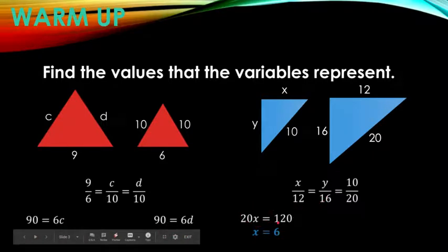So 20X is equal to 120. To find X, divide both sides by 20, the answer is 6.